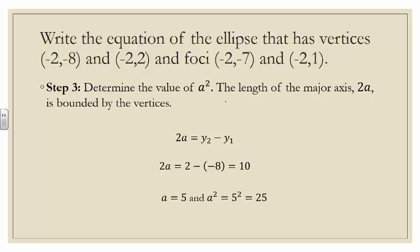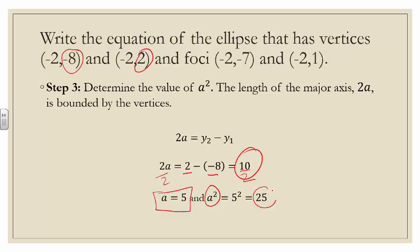Step 3: determine the value of a squared. The length of the major axis is 2a and is bounded by the vertices. Therefore, 2a equals the second y-coordinate minus the first: 2 minus negative 8, which is the same as 2 plus 8, giving us 10. Dividing both sides by 2 gives us a equals 5, and therefore a squared equals 25.